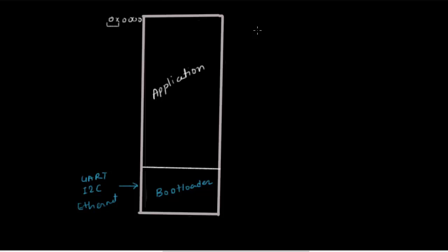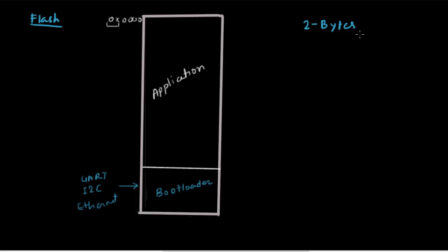Let us look at the flash organization of the ATmega32. The flash memory is organized into chunks of two bytes. Even though this is an 8-bit controller — where all data processing happens in chunks of 8 bits — the flash memory where we store the actual code is arranged as two bytes per location. In other words, it is word addressable.